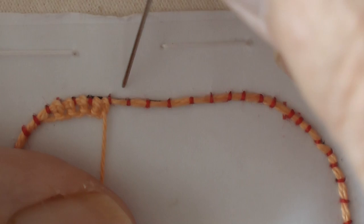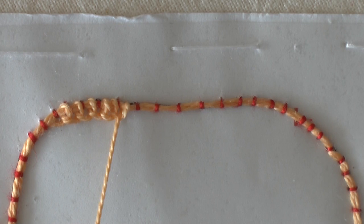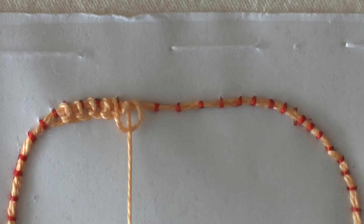Just pull it up to the same sort of tension as the others. Hold it with your thumb and make the next stitch. Just continue like that along the row.